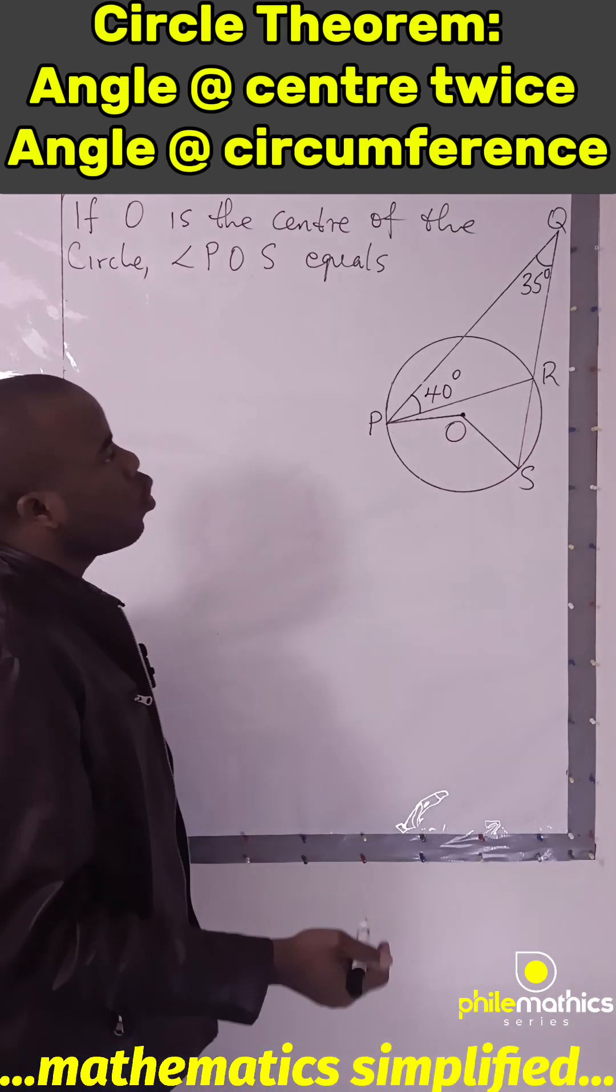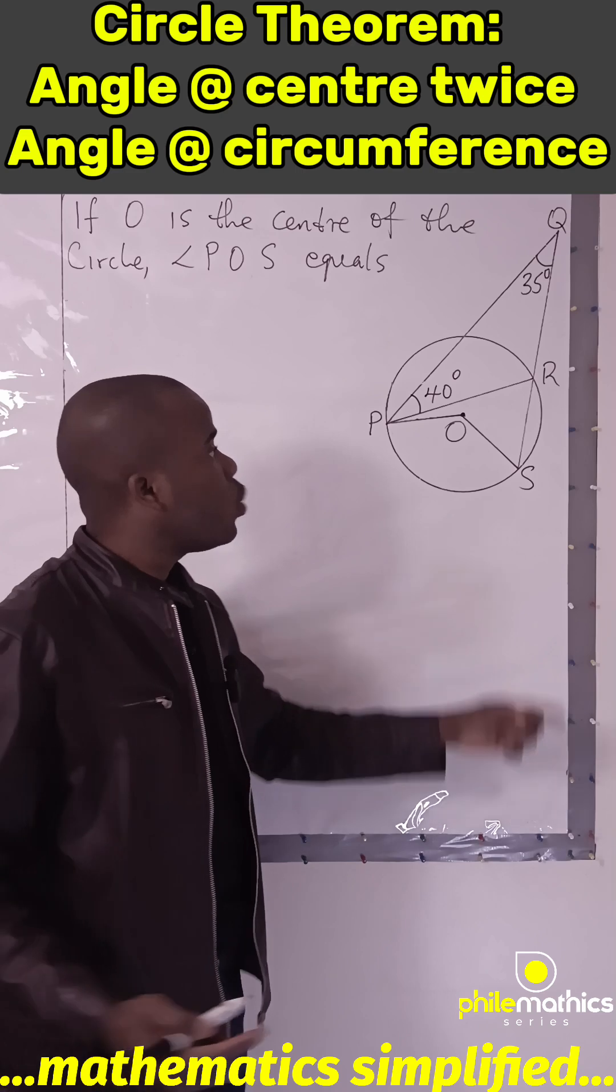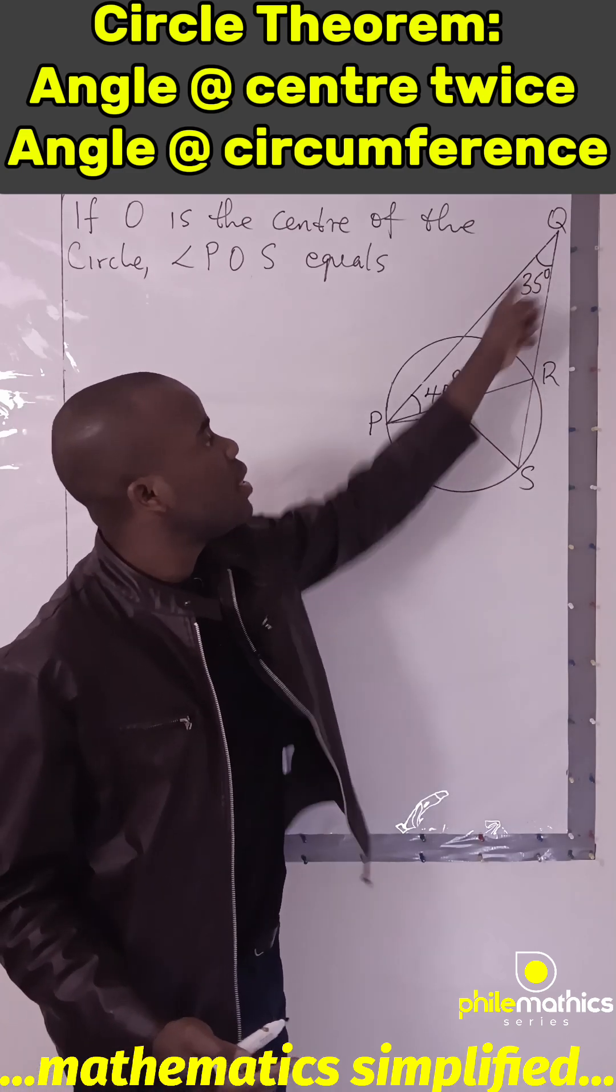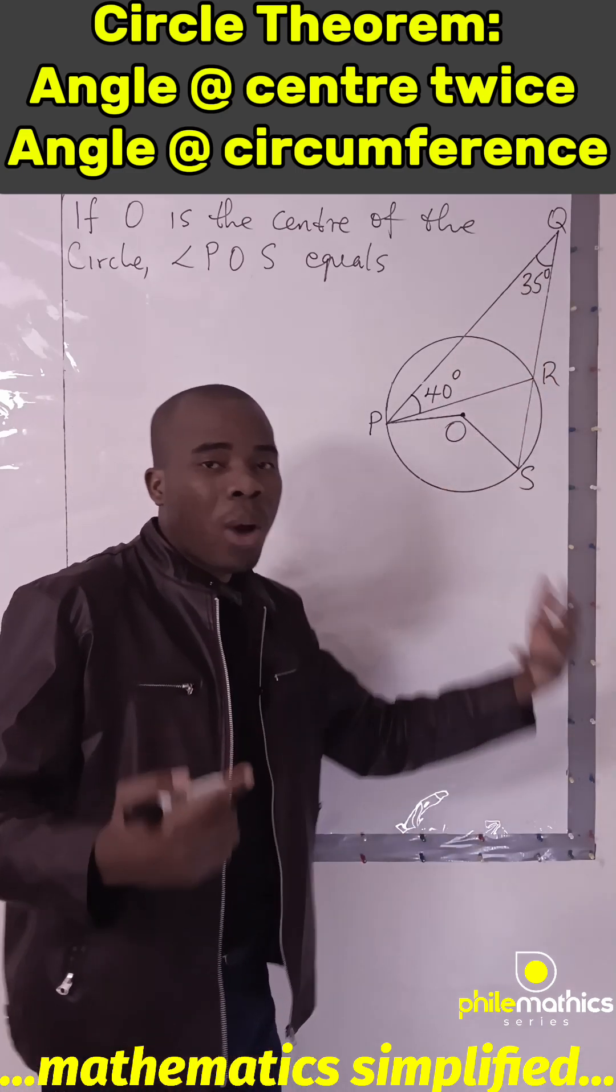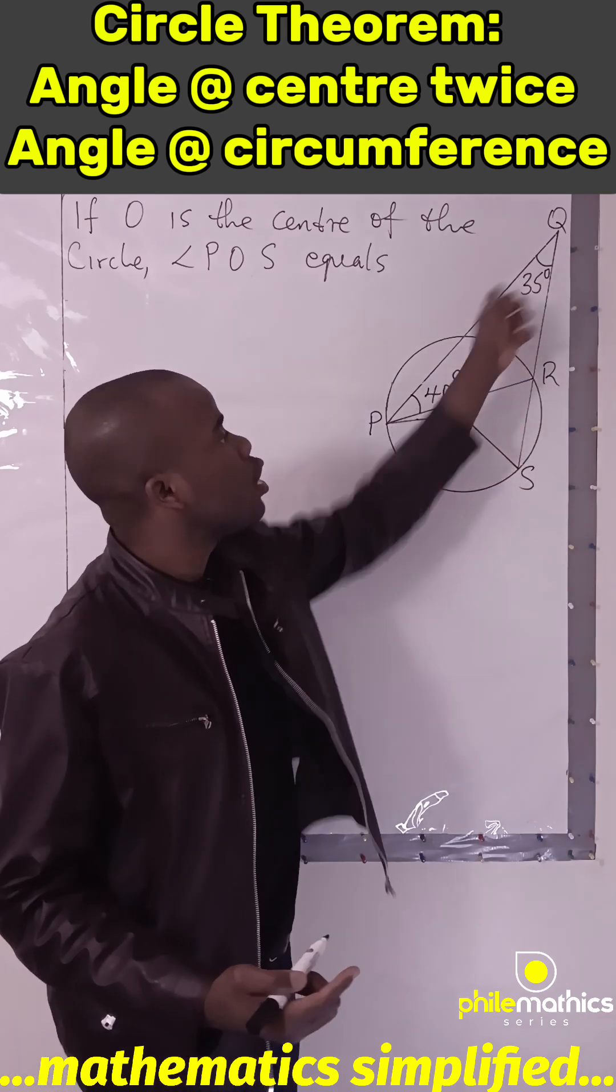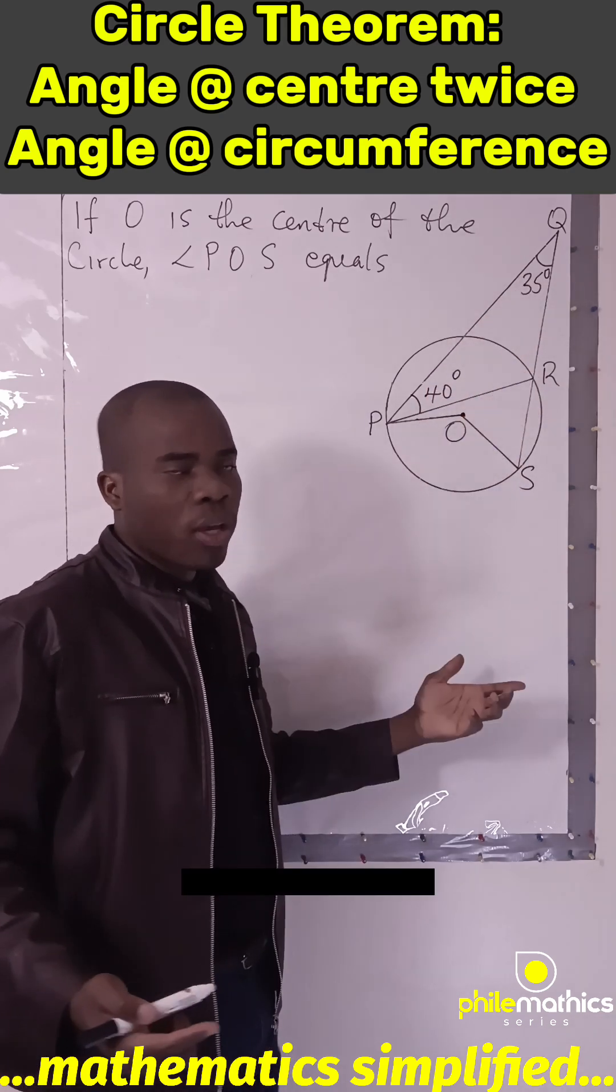But someone can easily go through the long route, which is to find what this angle is, saying that these angles sum up to 180. And if you subtract this from 180, you get what this is. That's okay.